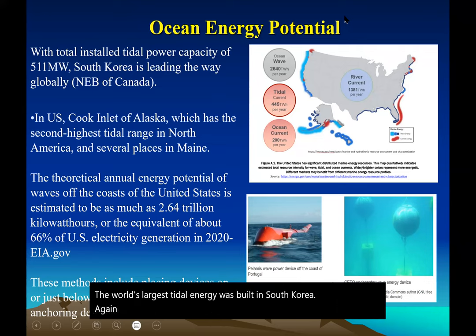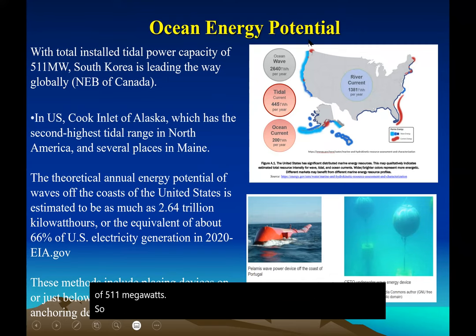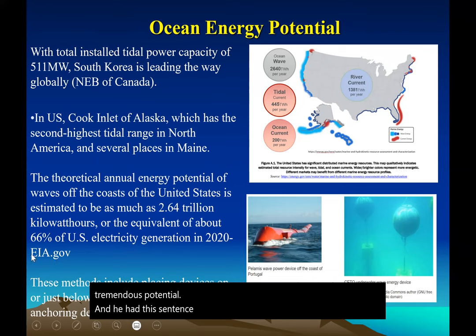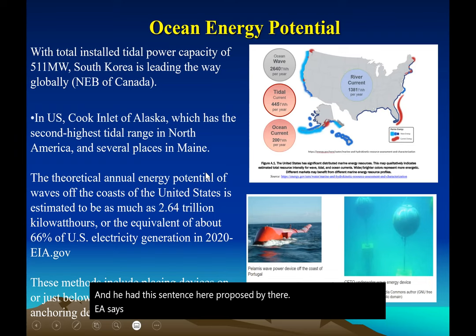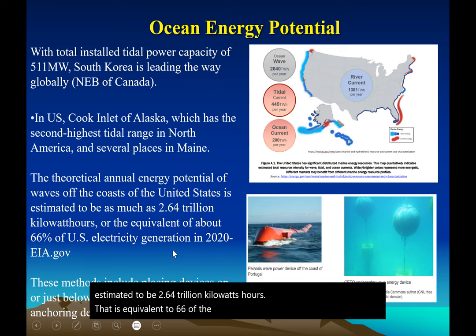The ocean energy potential is just tremendous. The plant installed in South Korea has a power capacity of 511 megawatts. Globally and in the USA, you can see potential along the east and west coasts — the Cook Inlet of Alaska and offshore Maine have tremendous potential. According to the EIA, the theoretical annual energy potential of waves in the USA is estimated to be 2.64 trillion kilowatt-hours, which is equivalent to 66% of U.S. electricity generation in 2020.